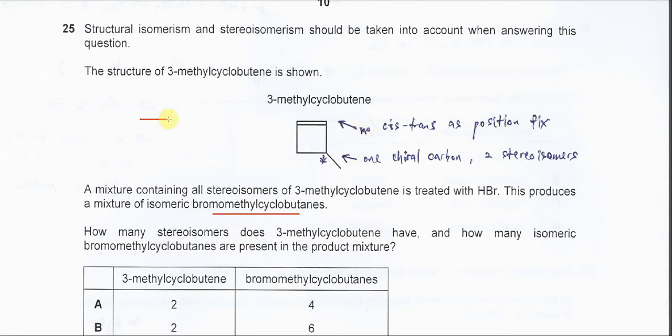Because in order to form cis-trans, we know that if we have butene, if the two methyl groups are at different sites, this is trans. If the two methyl groups are at the same site, it's cis.